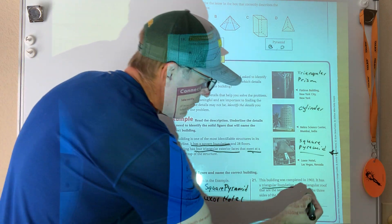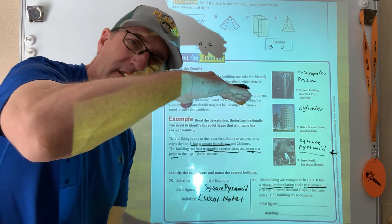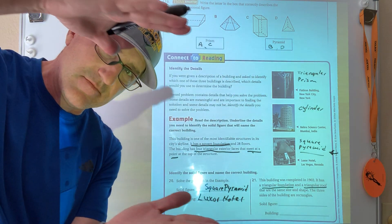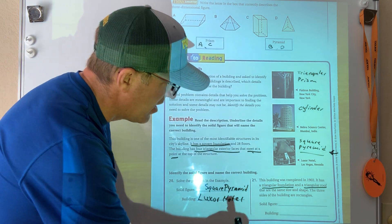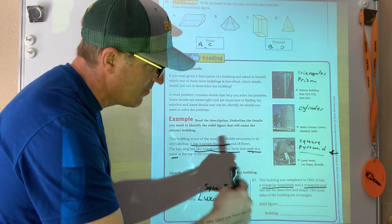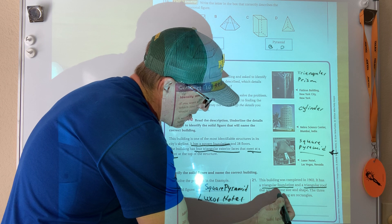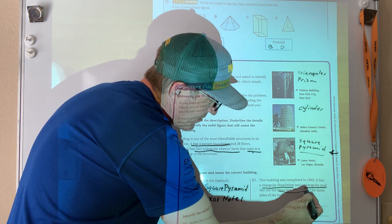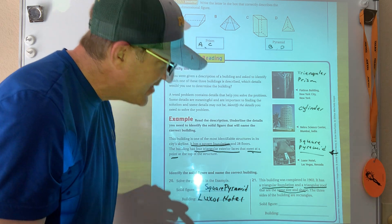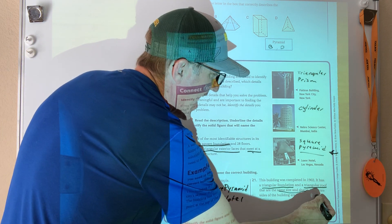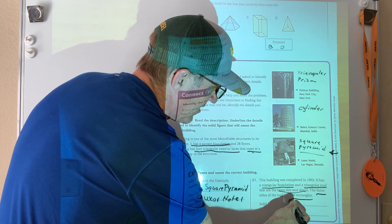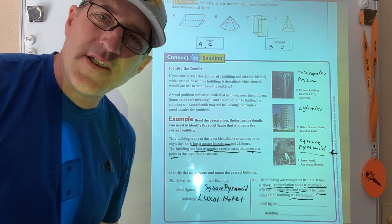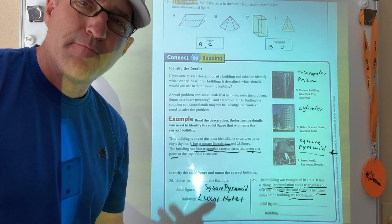And a triangular roof. Interesting. So I got a triangle and a triangle that are the same size and shape. Perfect. These, I guess we should probably add that, same size and shape. The three sides of the building are rectangles. So my lateral faces are rectangles, so I know that this has to be a prism.